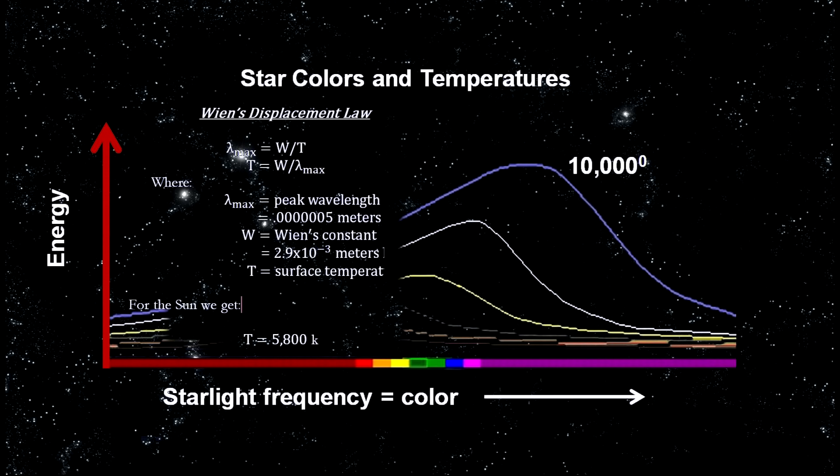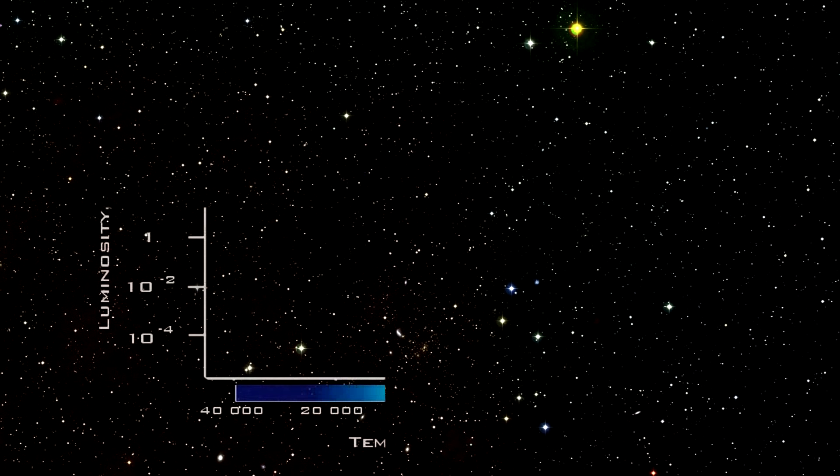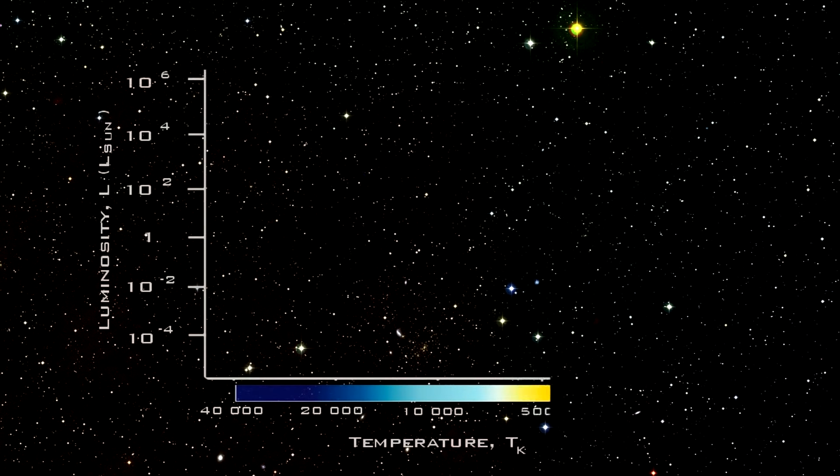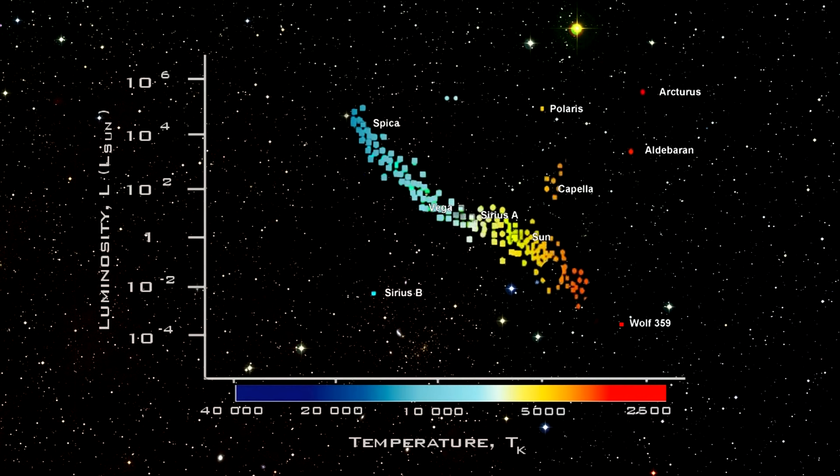Now that we know star temperatures via their color, and luminosity via their parallax distance, we can build a diagram I mentioned in the introduction. In 1913, Ejnar Hertzsprung and Henry Russell began mapping these star temperatures against their luminosity. Note that the horizontal axis is mapping temperatures in the decreasing direction. If we begin with the stars we use to illustrate black body radiation, Aldebaran, Arcturus, Capella, our own sun, Sirius A, and Spica, and throw in a few others like Sirius B, Wolf 359, Polaris, and Vega, we get a graph that looks like this. With this small sample, it looks like any combination of temperature and luminosity is possible.